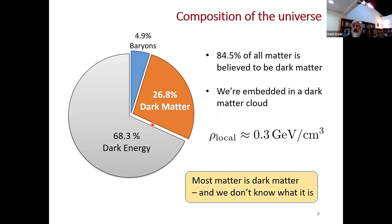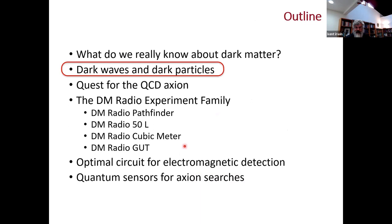From CMB measurements and others, about 85% of all matter in the universe is believed to be dark matter, and only 15% is normal matter we understand. There's also a major component of the energy in the universe which is dark energy, which we won't discuss today.